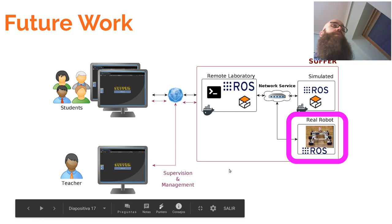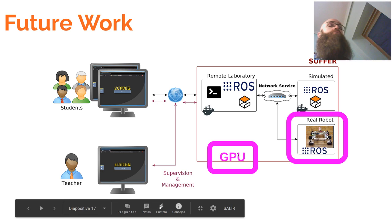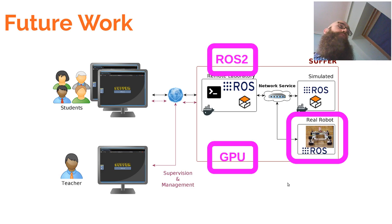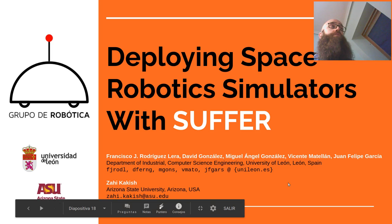For future work, we are working to integrate a real small rover based on the platform that JPL released, and also in the SAFER platform we built and adapted with European components. The second goal is to add a GPU to our system. The third is to migrate some components to ROS2 and support this virtual desktop environment with ROS2. That's all — thank you for attending this presentation and for your time.